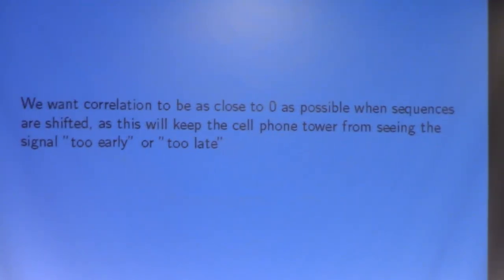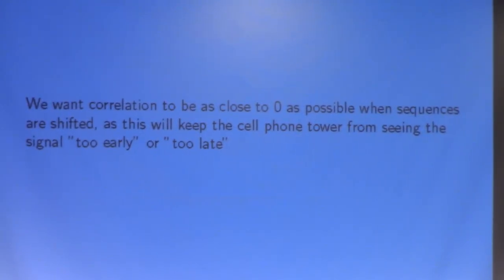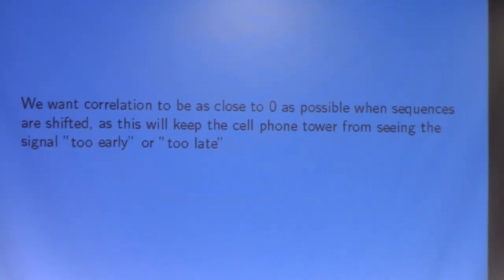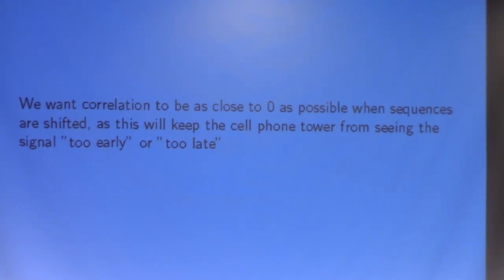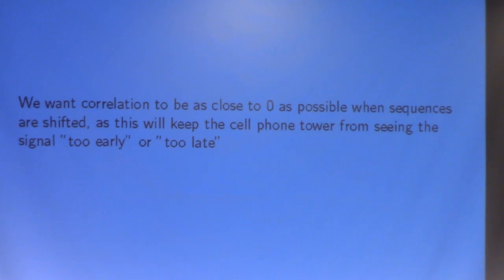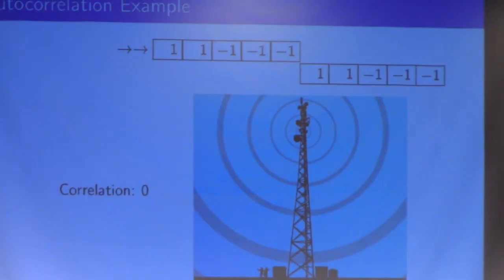We're going to want correlation in absolute value to be as close to zero as possible when the sequences are shifted, as this is going to keep the cell phone tower from seeing the signal too early or too late. We get a big spike when it's perfectly overlaid, and you guys will see that soon.